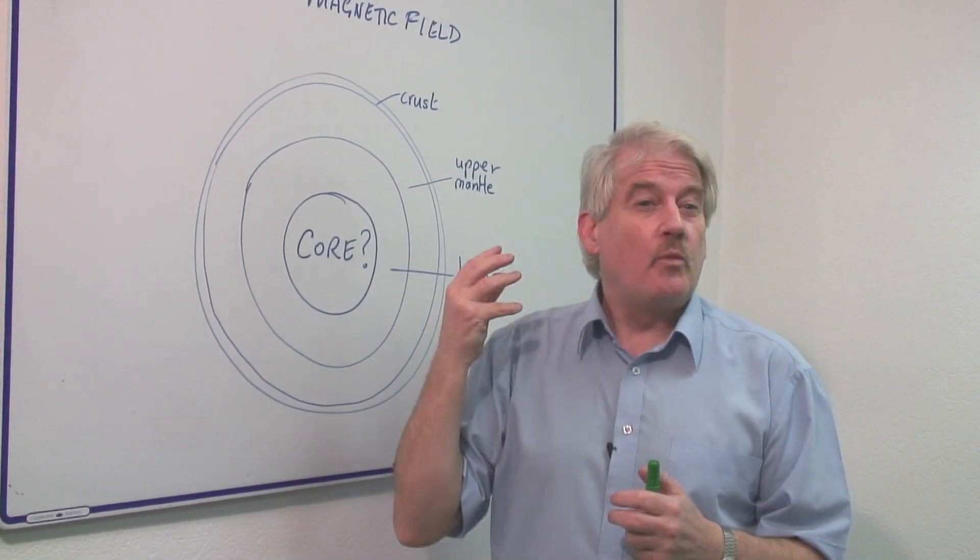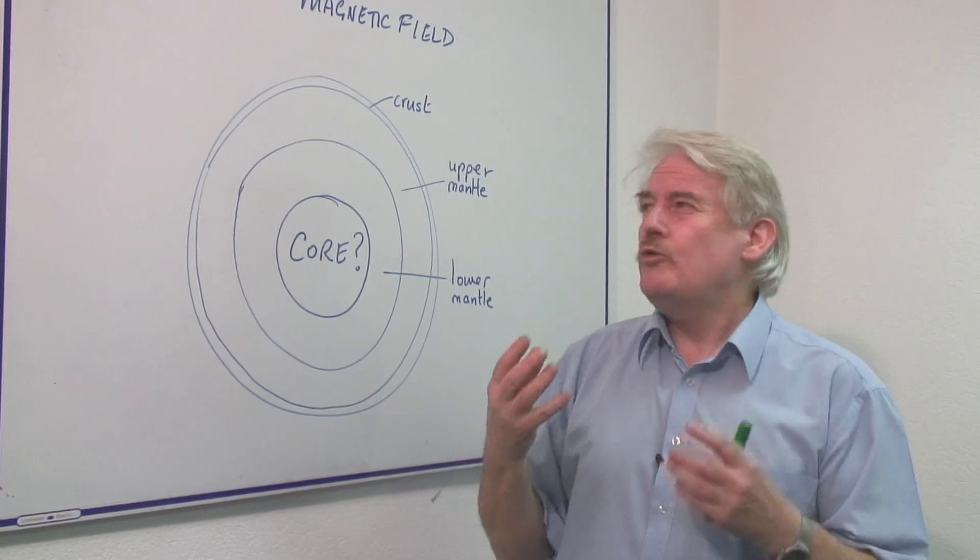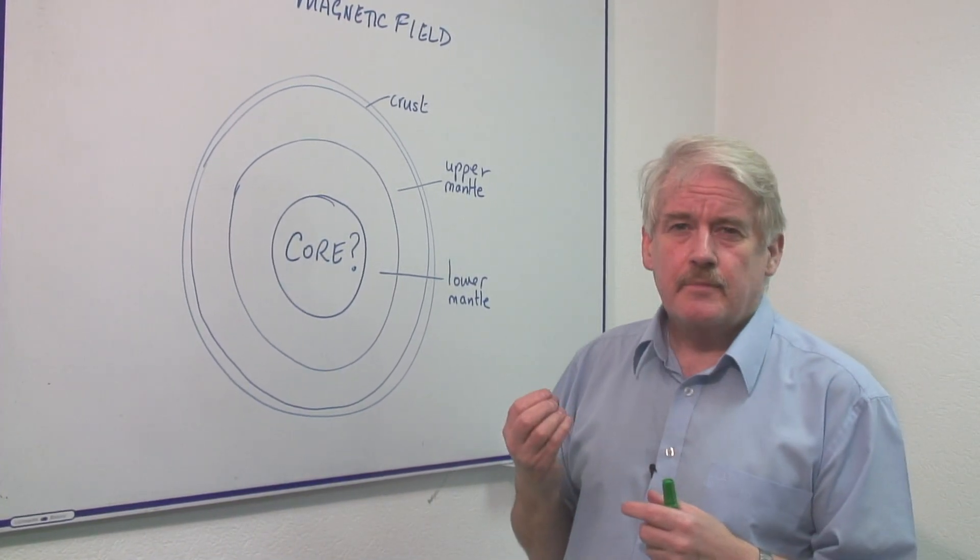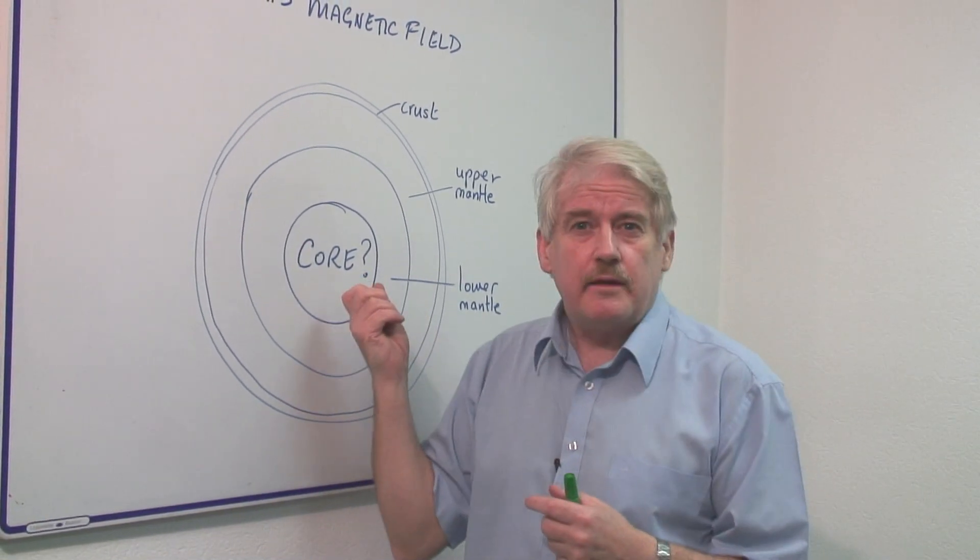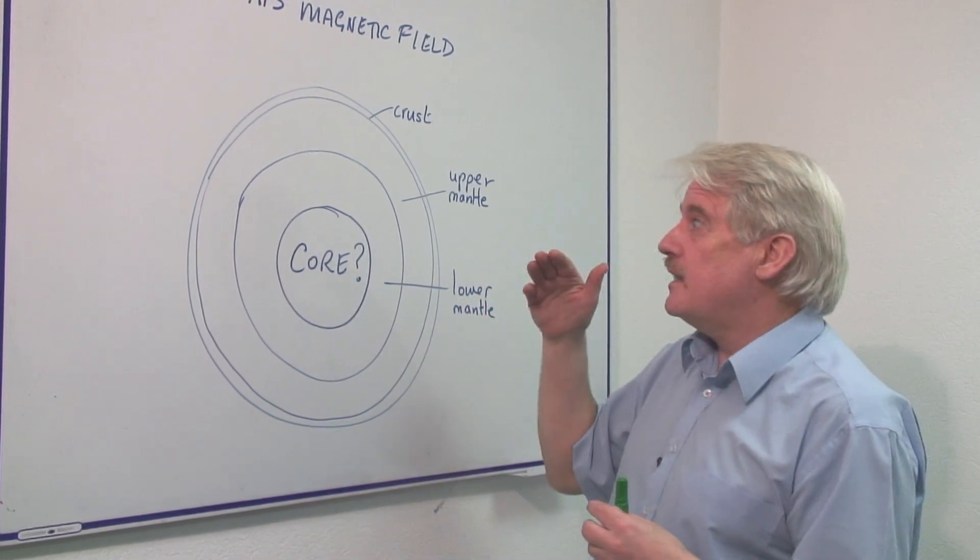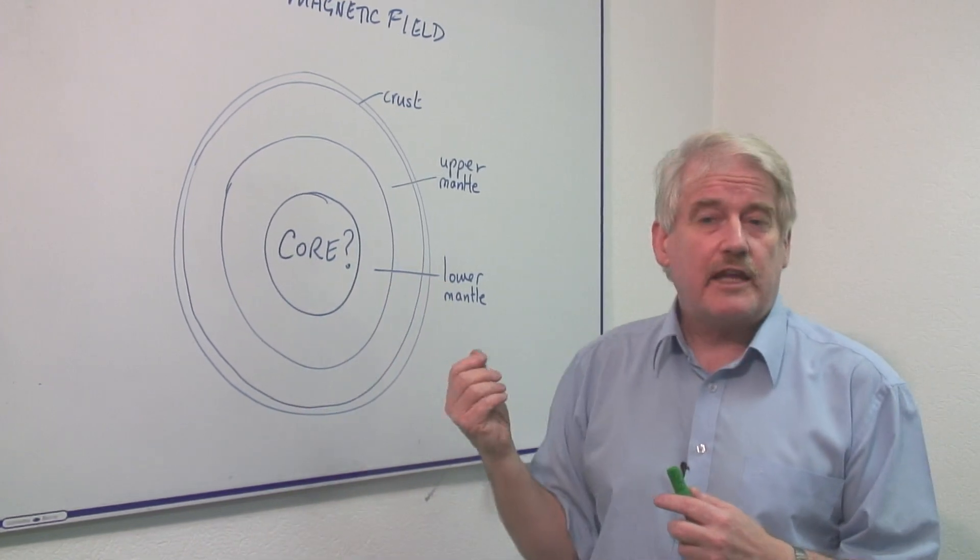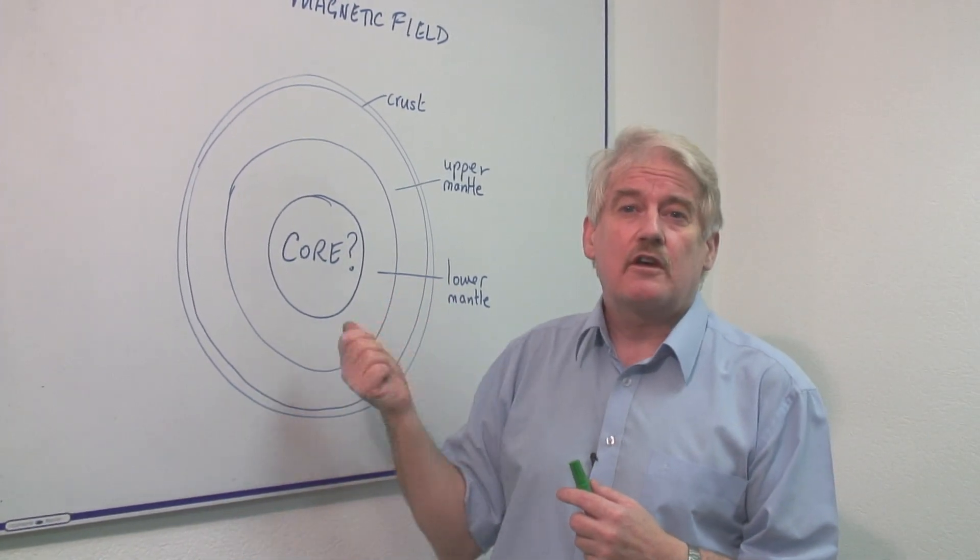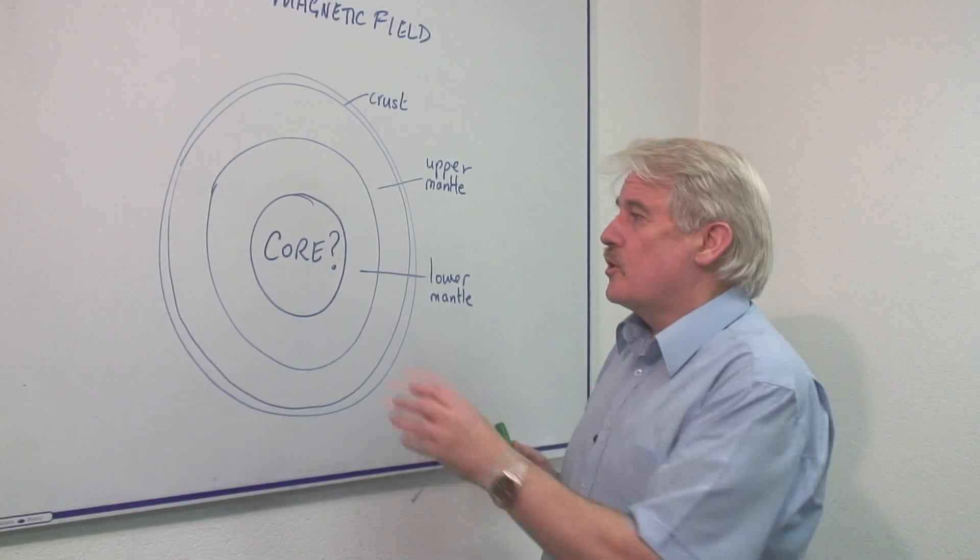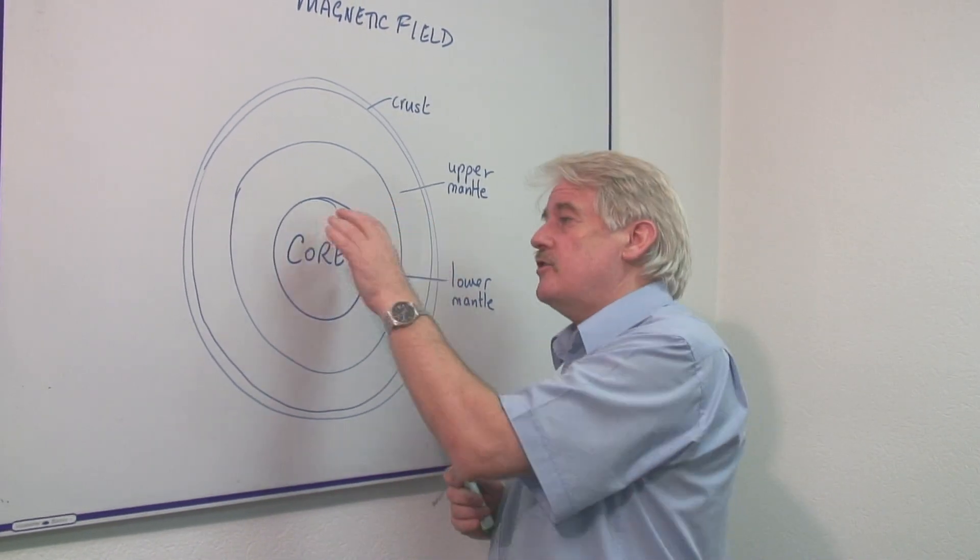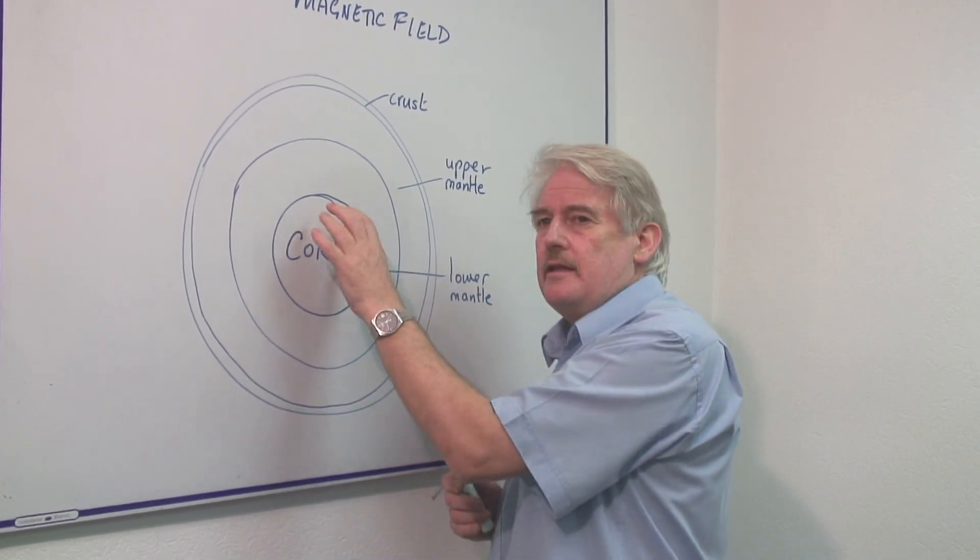And obviously, where there is iron, you expect magnetism. But the core is liquid. And it is believed that there is a rotation within that central core of liquid, which produces the Earth's magnetism. But whatever happens, the Earth's magnetism appears in this core.